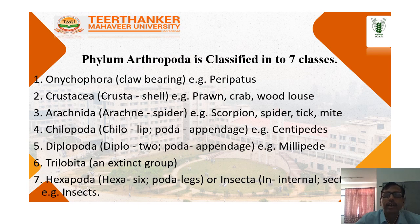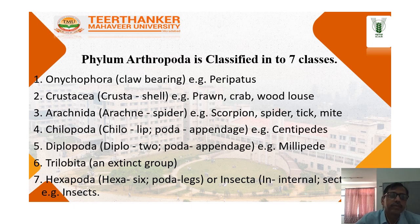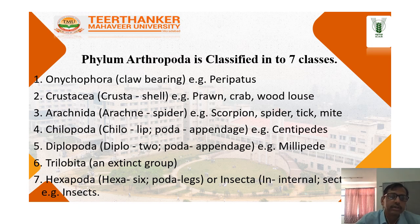Phylum Arthropoda is classified into 7 classes: Onychophora (claw bearing, e.g. Peripatus), Crustacea (e.g. prawn, crab, woodlouse), Arachnida (e.g. scorpion, spider, tick/mite), Chilopoda (centipedes), Diplopoda (millipedes), Symphyla (Hanseniella), and Insecta (Hexapoda).